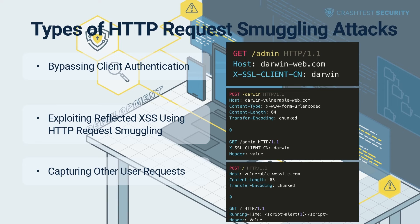Capturing other user requests — attackers can use HTTP request smuggling to access the details of authorized users' requests in applications that allow for storing and retrieving textual data. The components extracted include session tokens, cookies, and other sensitive data submitted by the client. The attacker creates a smuggled request to submit data to the storage function, with the data parameter at the bottom of the request. The backend appends the subsequent legitimate request with the smuggled request, resulting in successful processing and storage of the smuggled request. The attackers can then retrieve this stored data using the normal retrieval function.